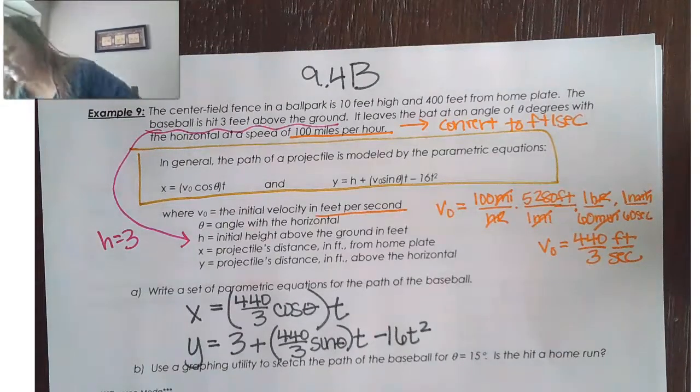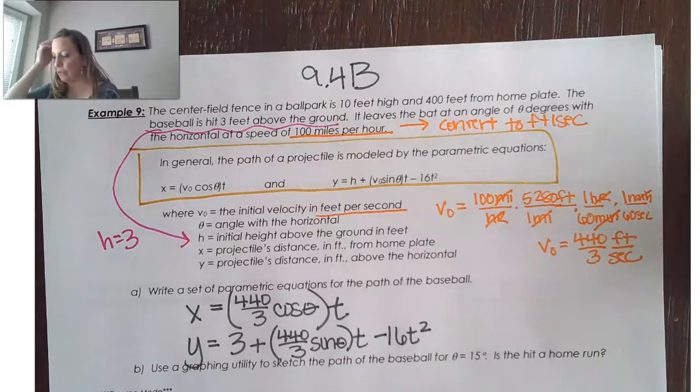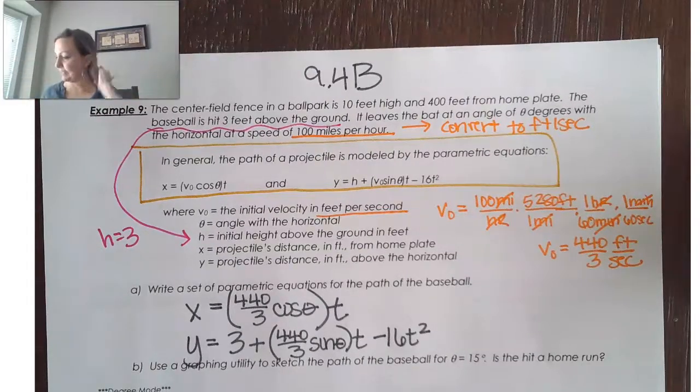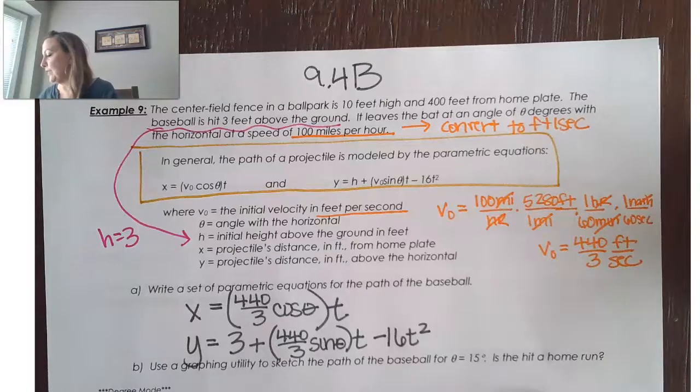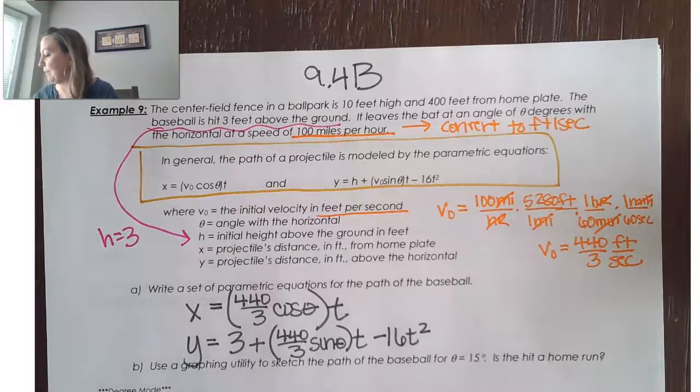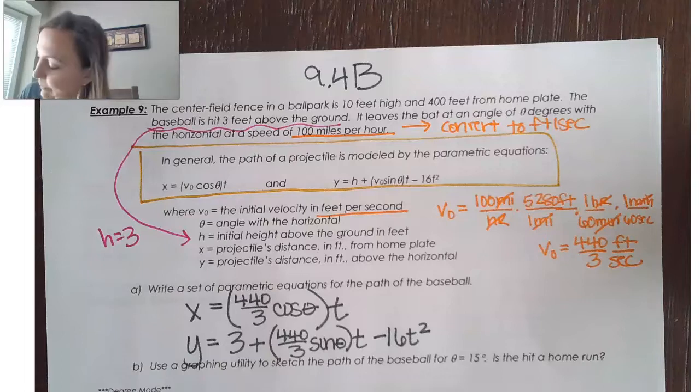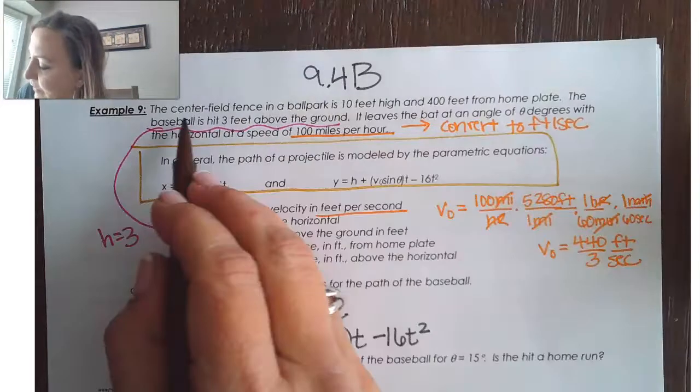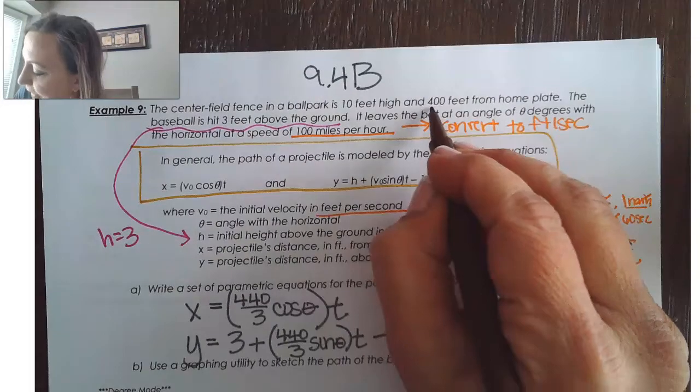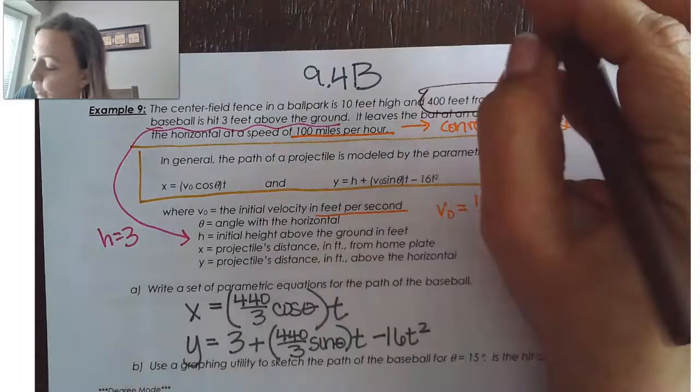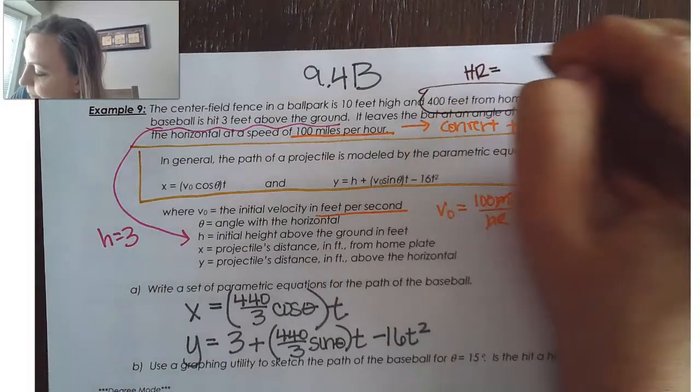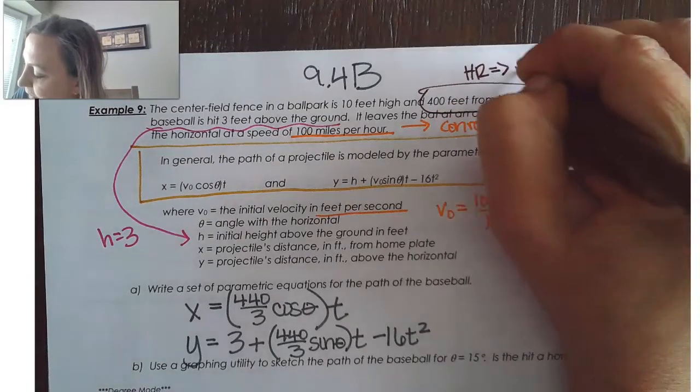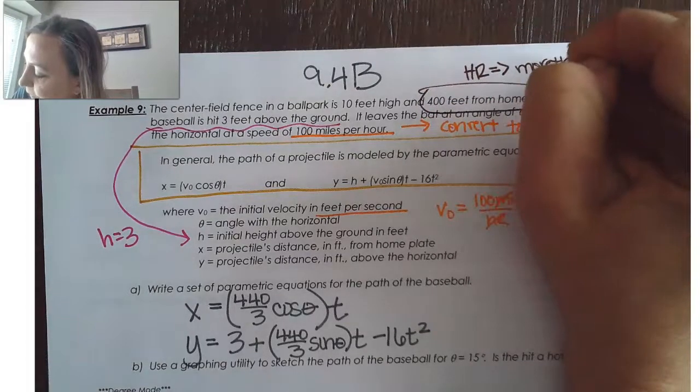So, then it says to use a graphing utility to sketch the path of the baseball for theta equals 15 degrees and decide if the hit is a home run. So, to decide if it's a home run or not, remember that the home run, it has to be, so center field is 400 feet from home plate. So, our home run, that means that it has to be more than 400 feet from home plate.